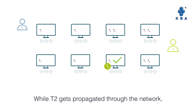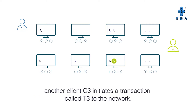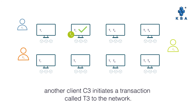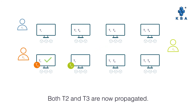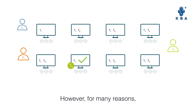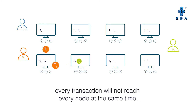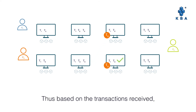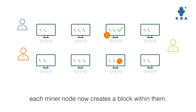While T2 gets propagated through the network, another client C3 initiates a transaction T3 to the network. Both T2 and T3 are now propagated. However, for many reasons, every transaction will not reach every node at the same time. Some nodes may receive all the transactions and some only a few. Thus, based on the transactions received, each miner node creates a block within them.